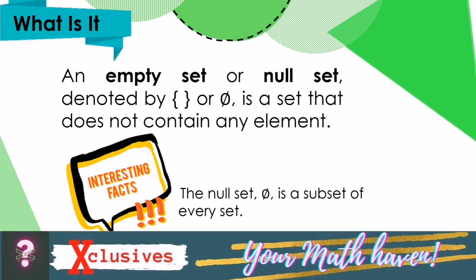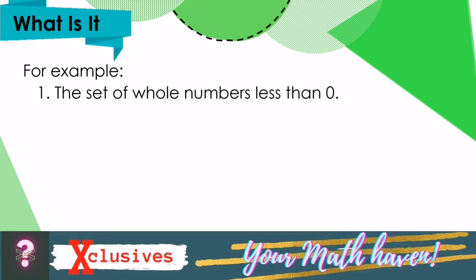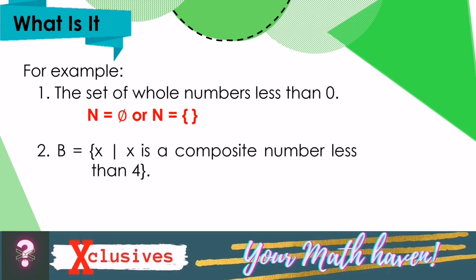Remember, the null set is a subset of every set. For example: 1. The set of whole numbers less than 0. We could write N is equal to the null set. Clearly, there is no whole number less than 0, therefore it is an empty set. 2. B is equal to the set X such that X is a composite number less than 4. B is an empty set because there is no composite number less than 4.